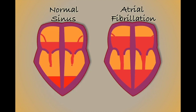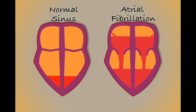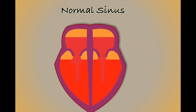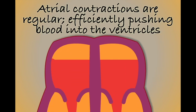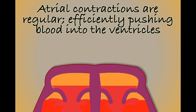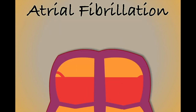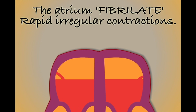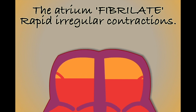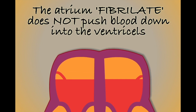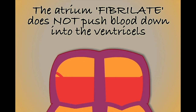However, if we look more closely, we can see differences between these two hearts. In sinus rhythm, the atria are contracting at regular intervals, pushing blood down into the ventricles. In atrial fibrillation, rather than contracting, the atria are fibrillating — beating very rapidly and irregularly. Really they are just shaking, which isn't helping to push blood down into the ventricles.